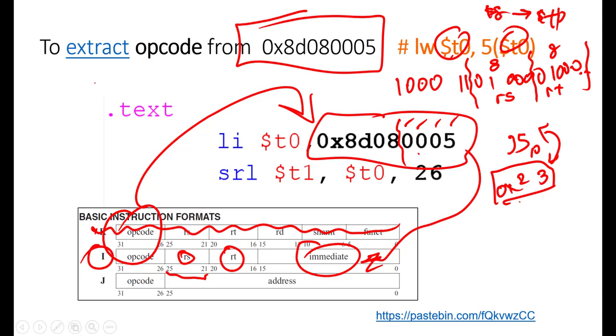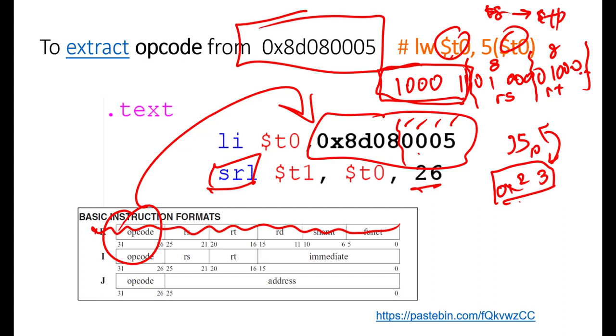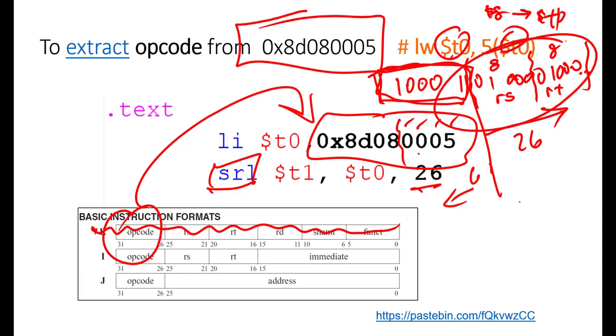Now, you can take this information, this sample code, and run it. And we should be able to generate a 35 if we use a shift right logical by the right number of bits. So don't forget, since this instruction has 6 bits for the opcode, that leaves us with 26 bits to the right.